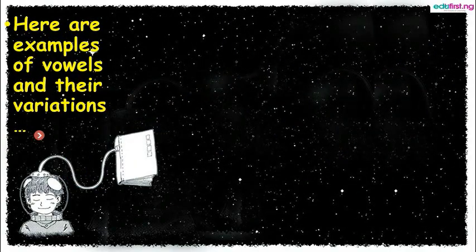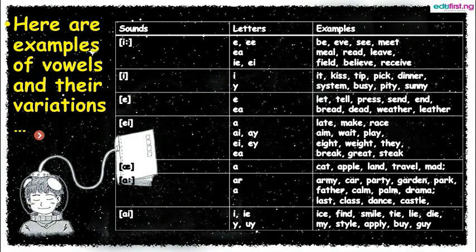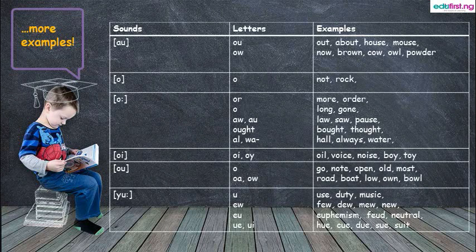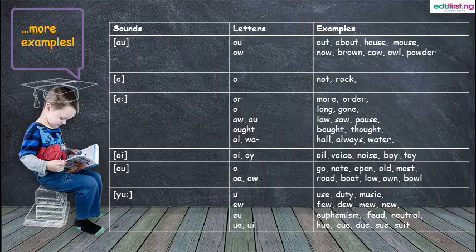So here are examples of vowels and their variations. We have the long I sound, the short I sound, the long E, short E, long and short sounds, the O sound, and the U sound — several of them with examples accompanying them. You can look at these examples and also make up a list of vowels that can fit in.